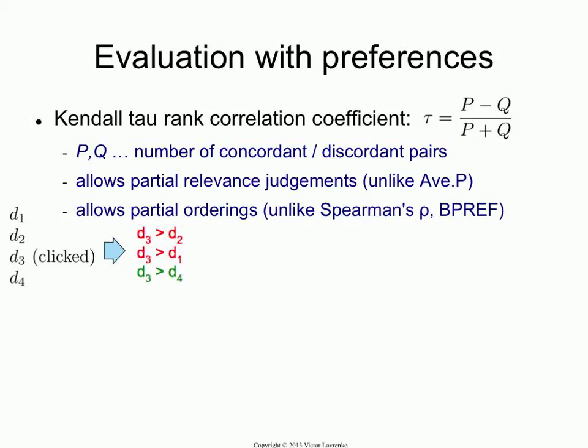We know that D3 was preferred to all the documents in that ranking — the user picked D3 out of everything, so we get these preferences. Now, if you think about the preferences that the system has come up with: the system has generated a ranking, so it implicitly has its own set of preferences. The system puts D1 at the top, meaning it prefers D1 to D2, D3, D4. It also prefers D2 to D3 and D4, and D3 was preferred to D4.